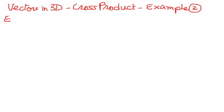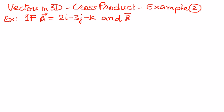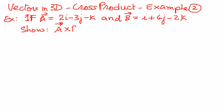Let us take an example. If a is a vector and the components of this vector are 2i minus 3j minus k, and if b is another vector and the components of those are i plus 4j minus 2k, then we want to prove the property which says vector a cross vector b is equal to negative of vector b cross vector a.